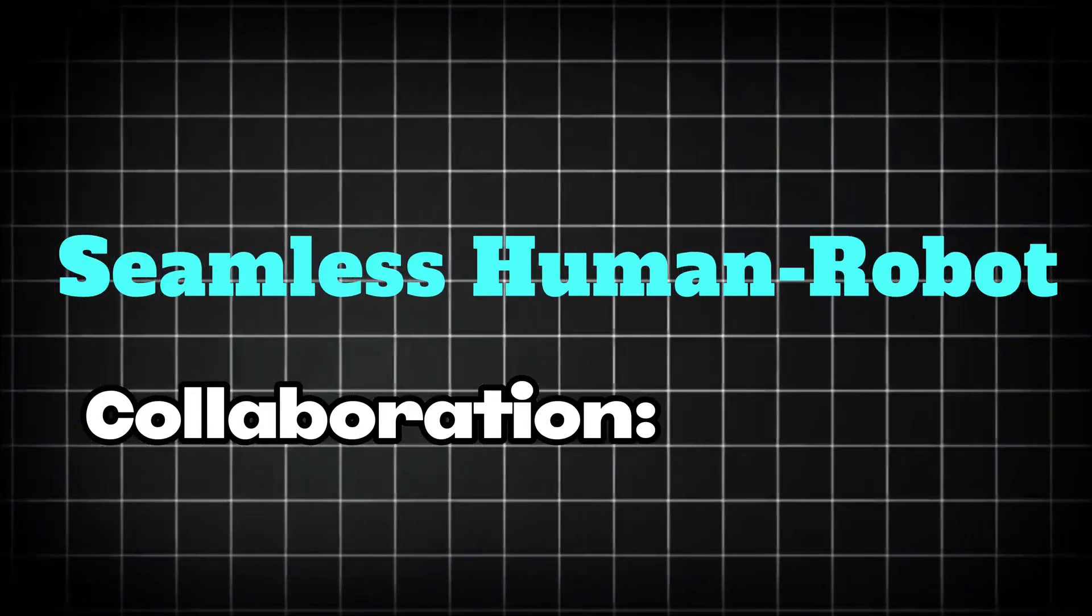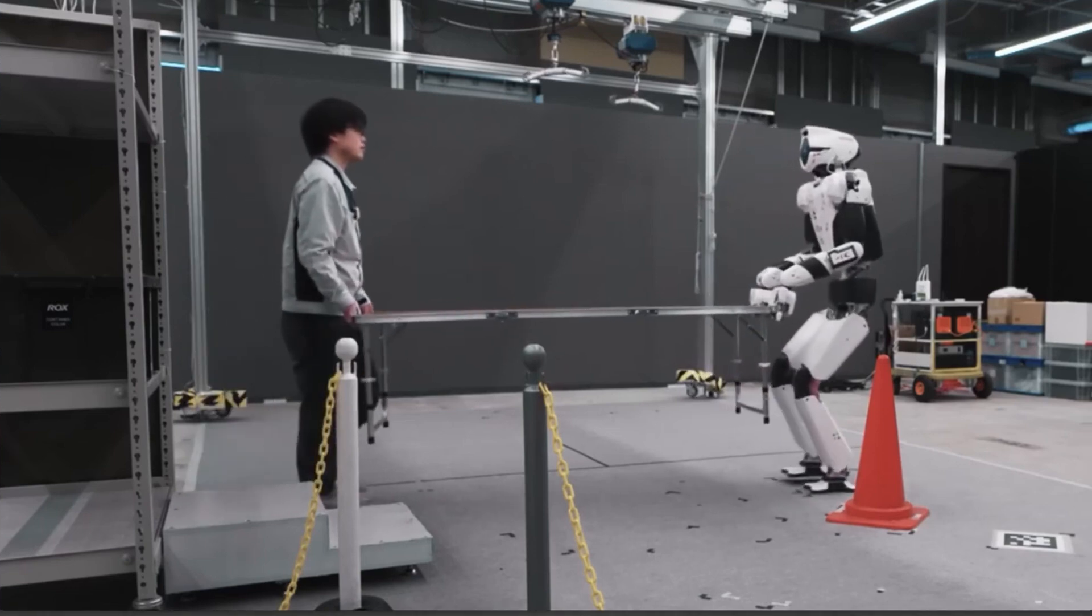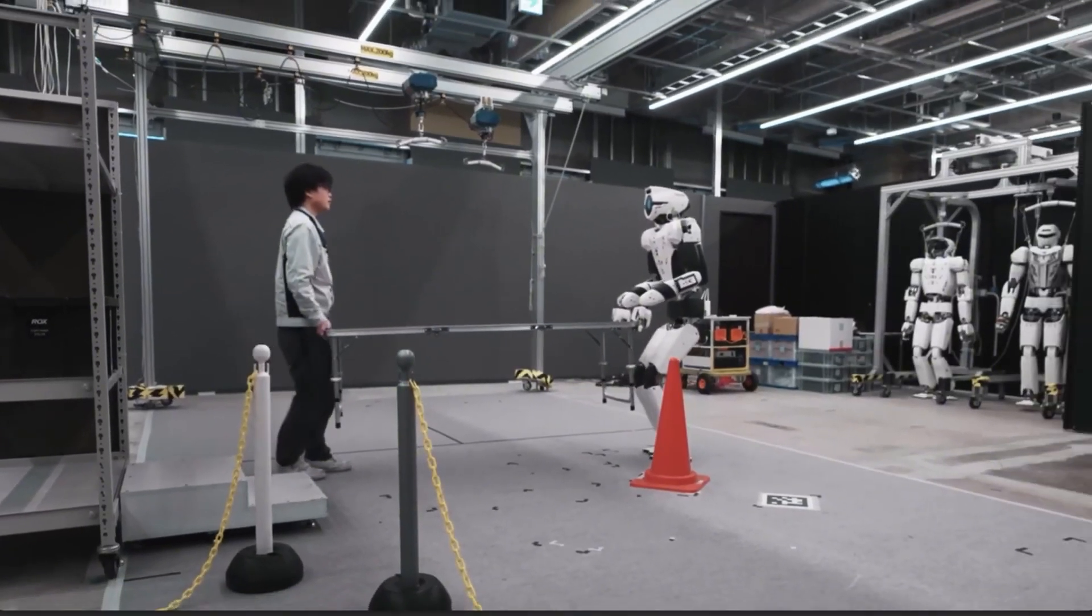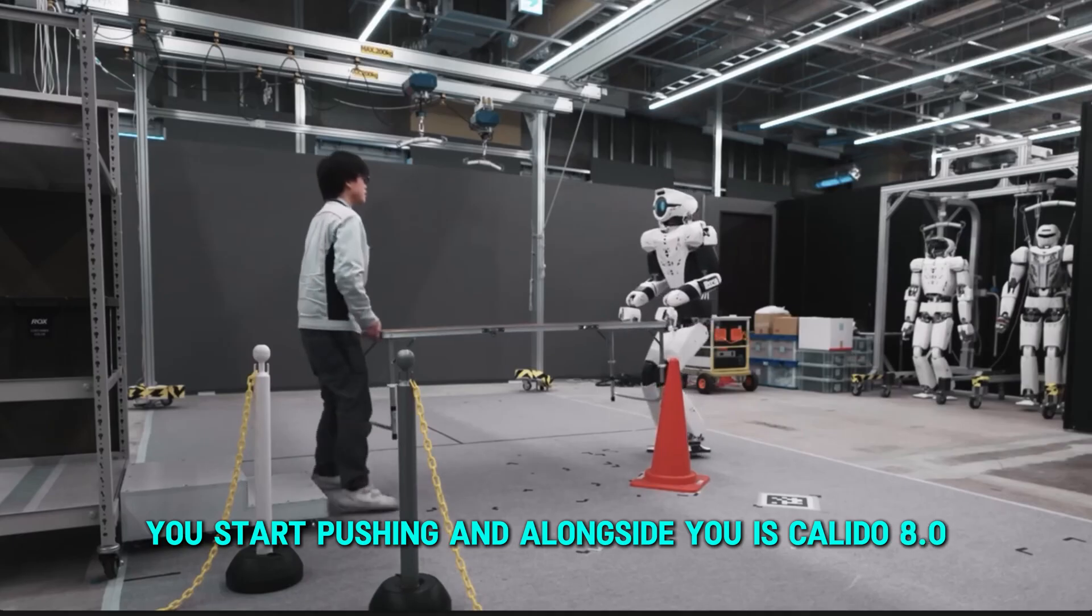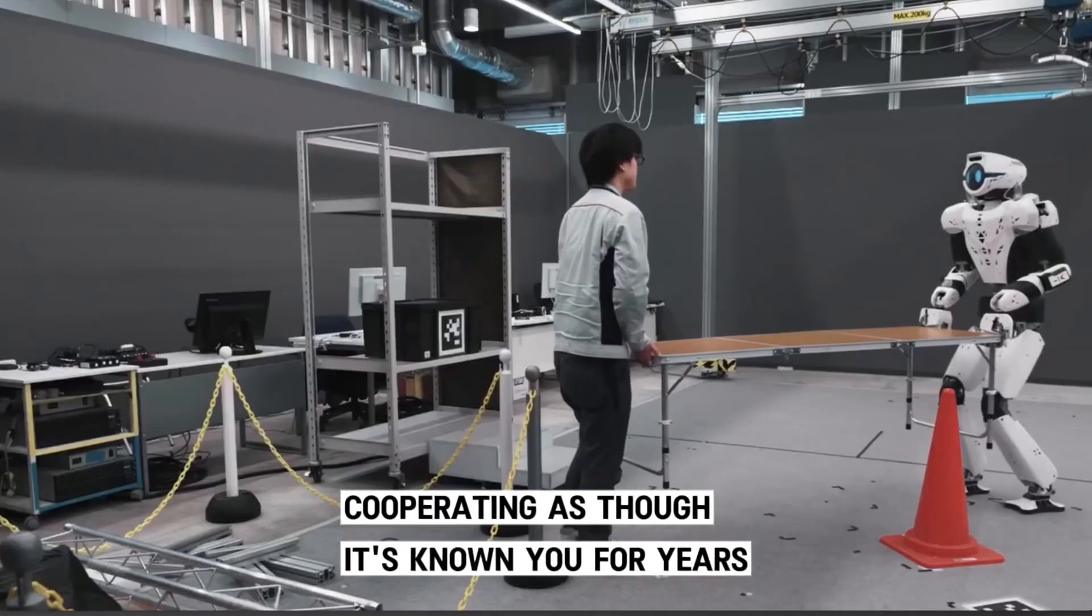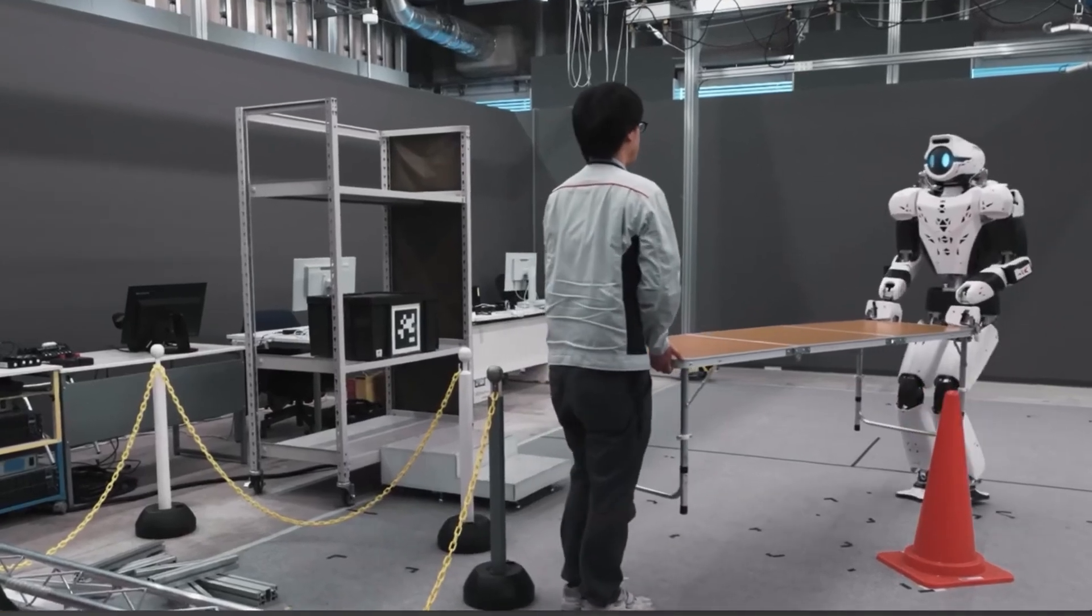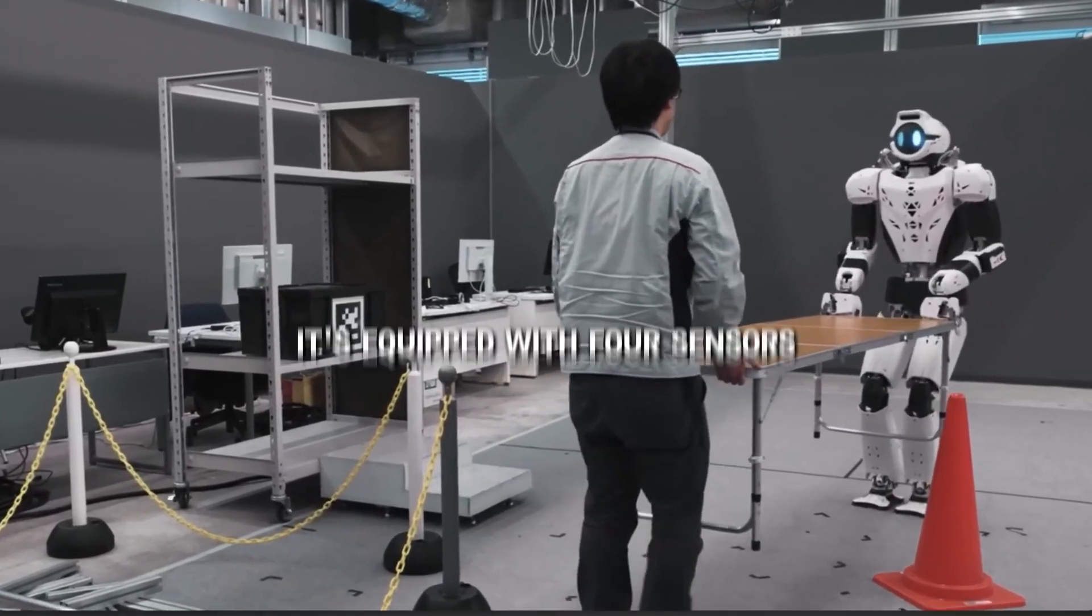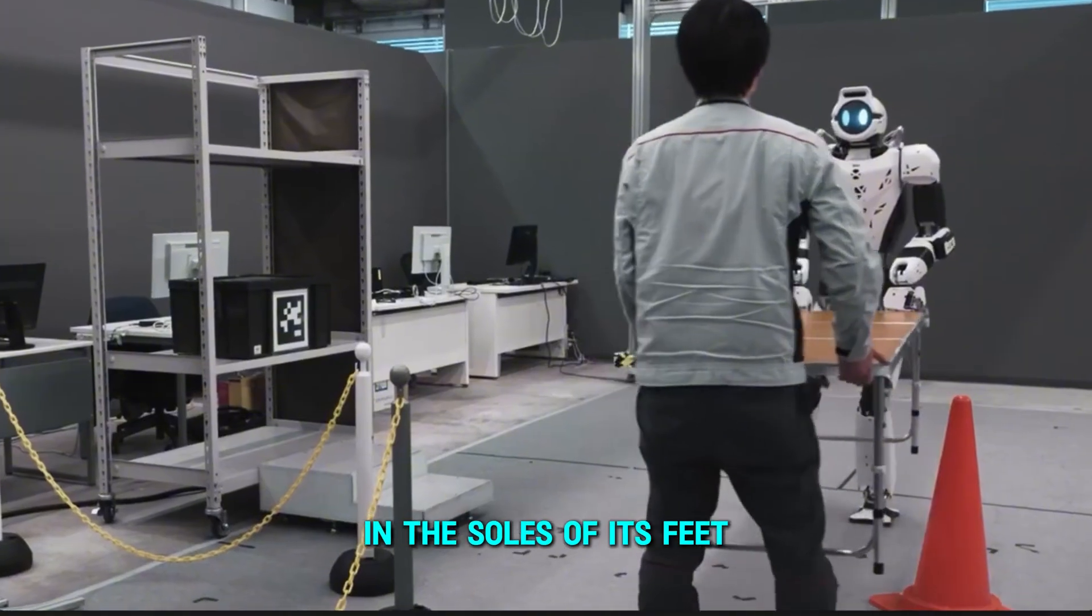Seamless human-robot collaboration. Picture yourself needing to move a heavy desk. You start pushing, and alongside you is Kaleido-8.0, cooperating as though it's known you for years. This robot is not just any helper. It's equipped with force sensors in the soles of its feet, finely attuned to every nuance of your movements.